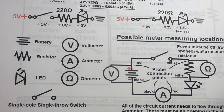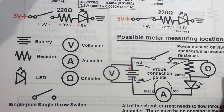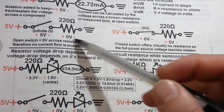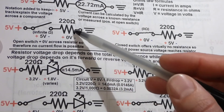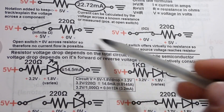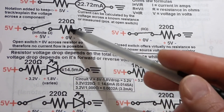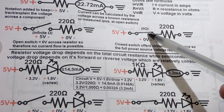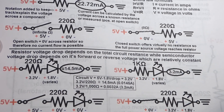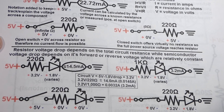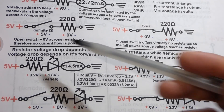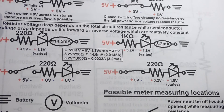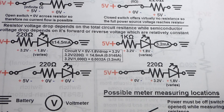In my next video I'm going to be talking about switches and resistors — how that affects the voltages in the circuit whether the switch is open or closed, and of course the current that flows through with an open switch versus a closed switch. Hope to see you in that video too.